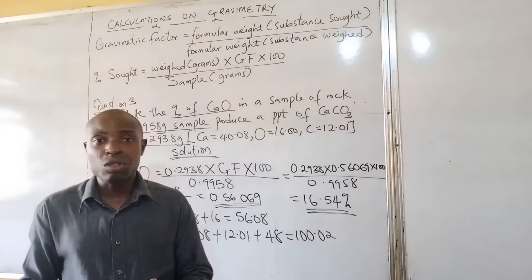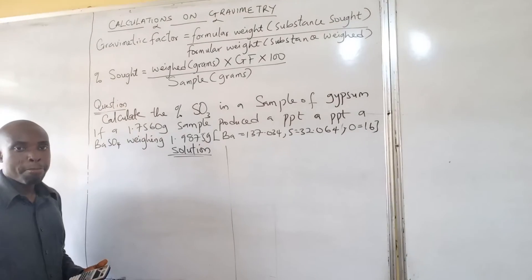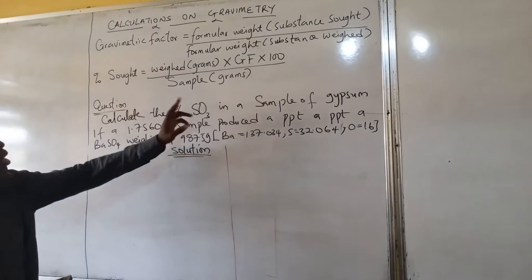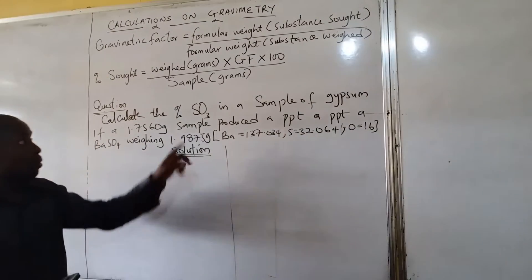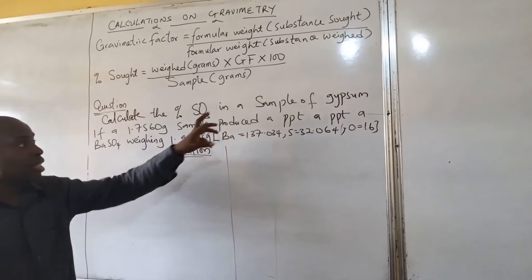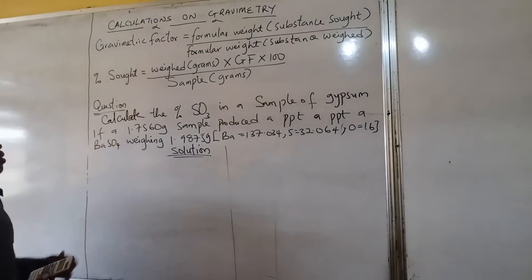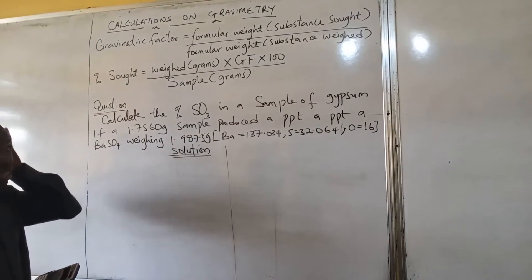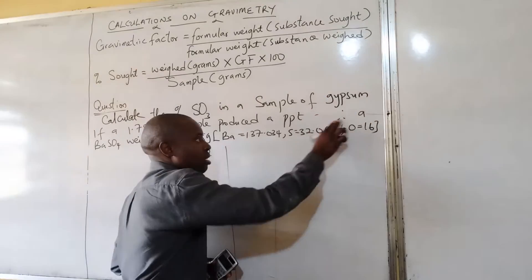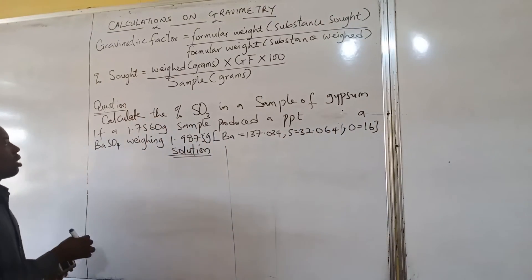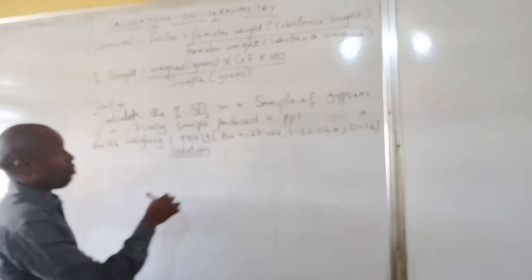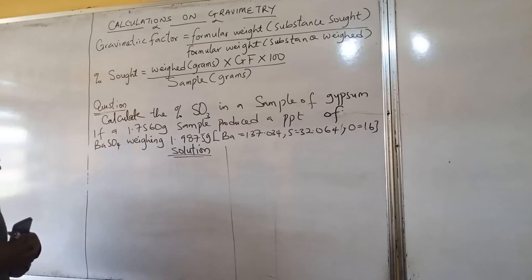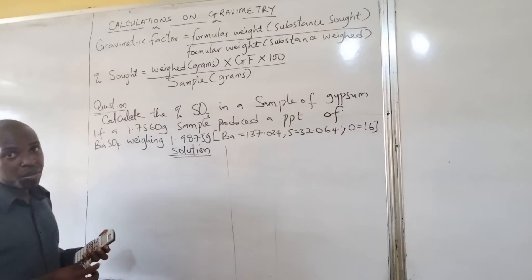So we move very fast to the next question. The next question is calculate the percentage of sulfur trioxide in the sample of gypsum sample. If a 1.7560 gram sample produces a precipitate of barium sulfate weighing 1.9875 gram sample.